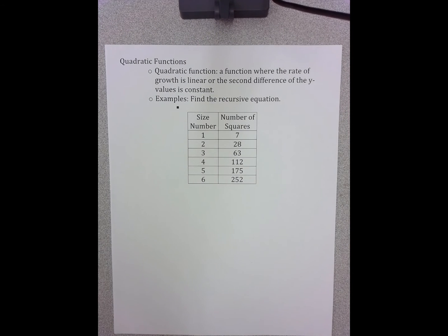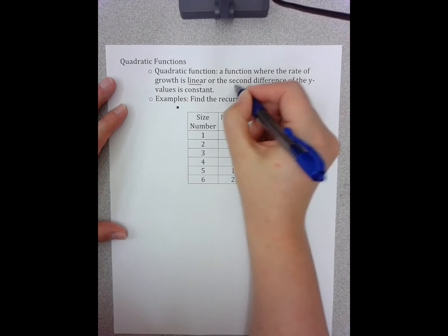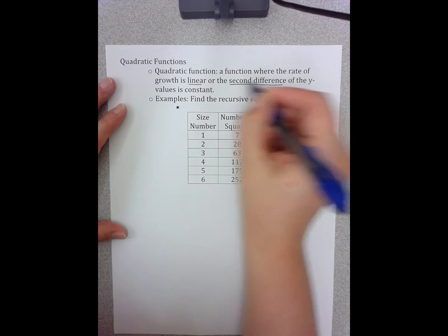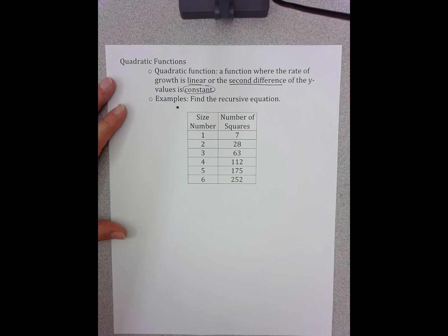These are the notes on quadratic functions. In this module, we've looked at finding equations for quadratic functions, both in the recursive and the explicit. Generally speaking, when we're doing the recursive, we're looking at a table, or we're looking at a pattern in which we've made a table. Remember that quadratic functions have a rate of growth that is linear, or the second difference is constant. Let's look at an example of that in this table right here.